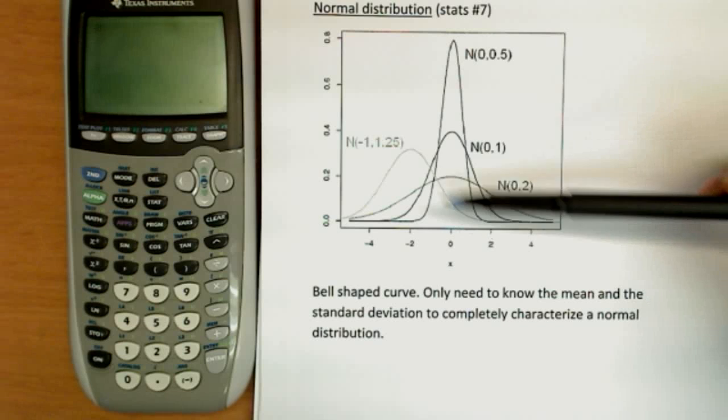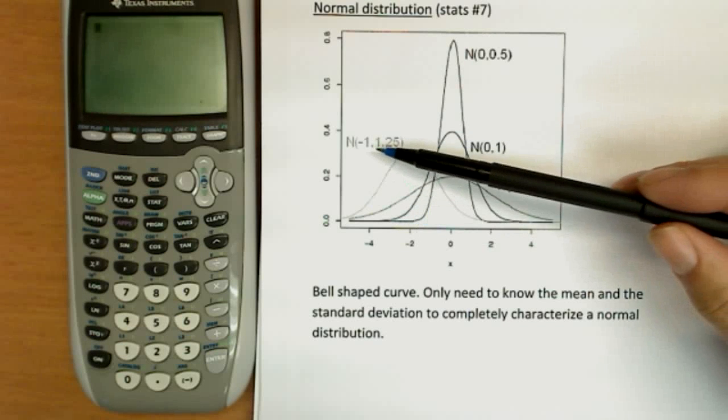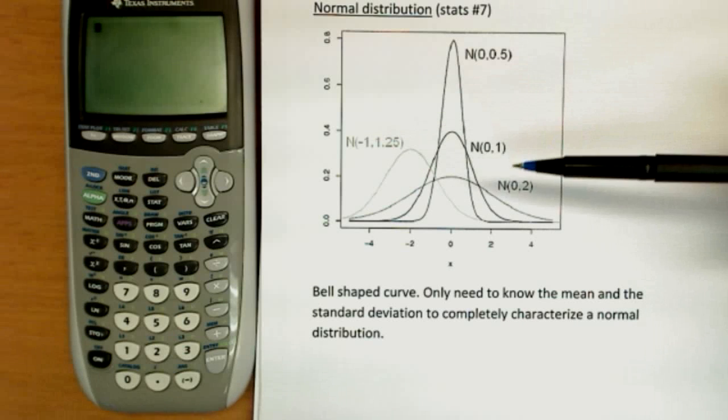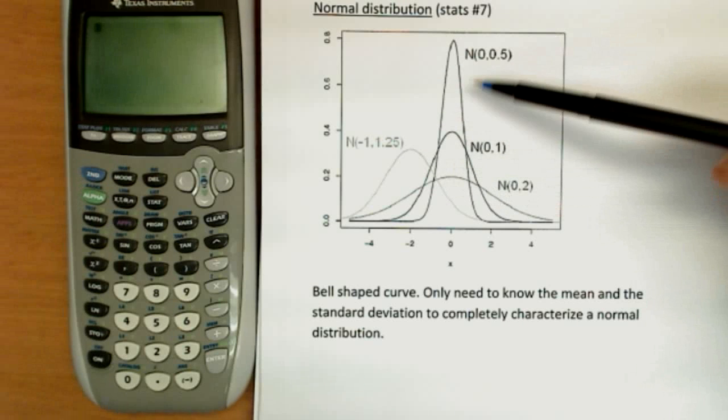These three all have a mean of zero. This one has a mean of negative two. I don't know why the software put out negative one there, but the mean is actually negative two. They also have different standard deviations.